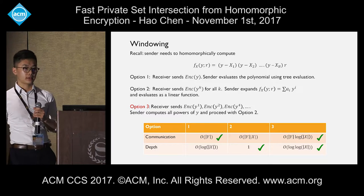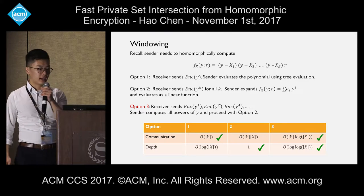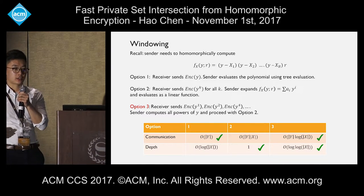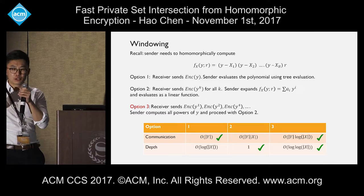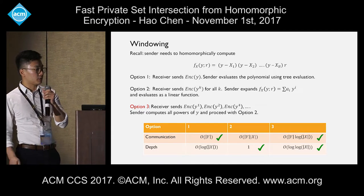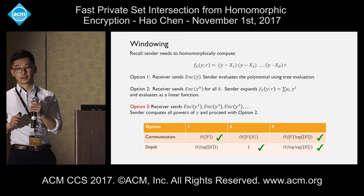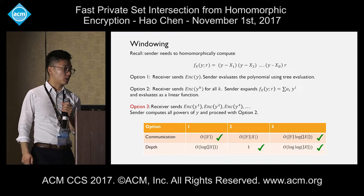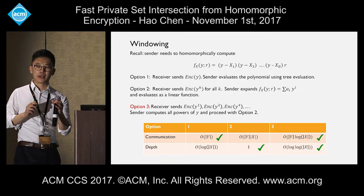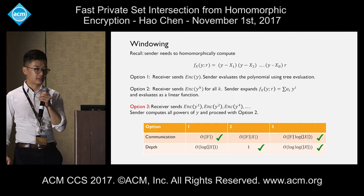Comparing the three approaches: the first option has small communication but very large depth, so it's not desirable. The second option has constant depth one, but you need to send B ciphertexts, so asymptotic communication is the product of the two set sizes — not good. For the third option, communication is linear in the small set size and logarithm in the big set size. In practice, this is often the best approach. As for depth, it becomes double-logarithm in the big set size, which is almost always a small constant. We chose this third approach as it gives the best trade-off.